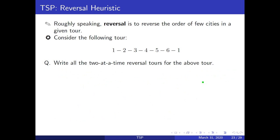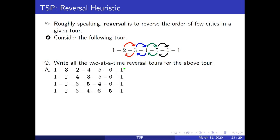Let us try to write all the two-at-a-time reversal tours. You could have a reversal here, or a reversal here, or a reversal here, or a reversal here. So we will have four two-at-a-time reversals, and these are those four reversals.